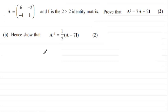So for this let's just put down the A squared equals 7A plus 2I. It says hence so it's got to be from this result here. So we'll just put down A squared equals 7A plus 2I.